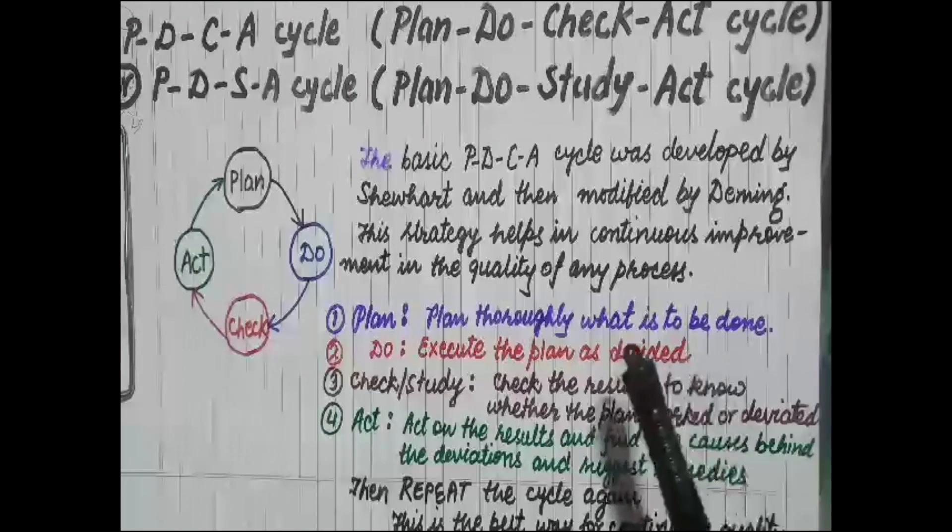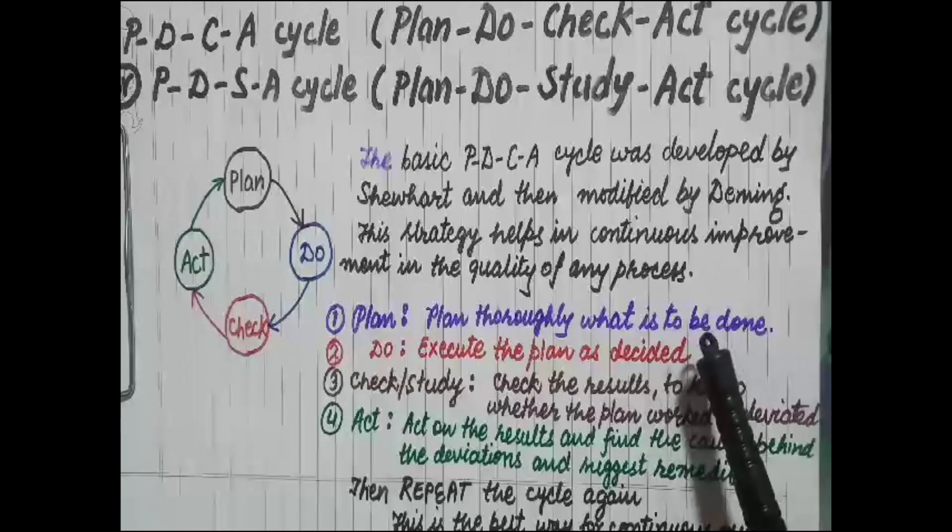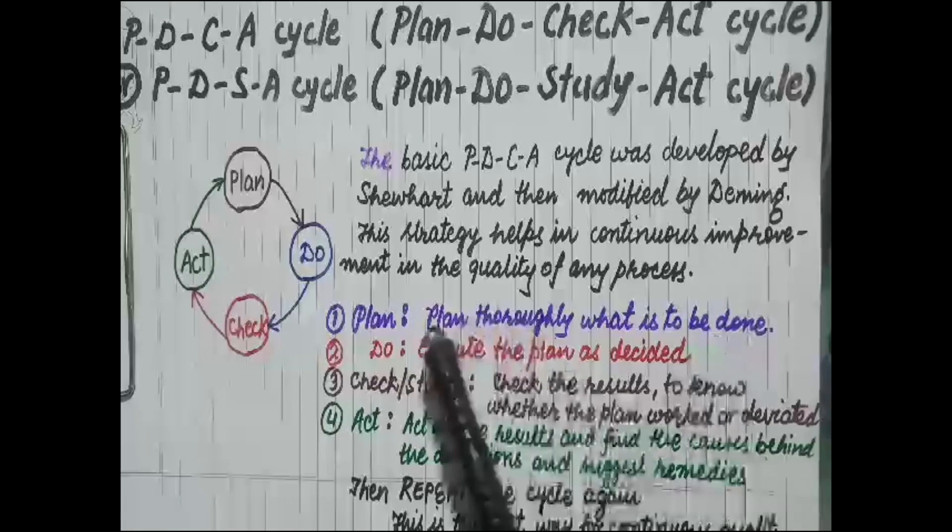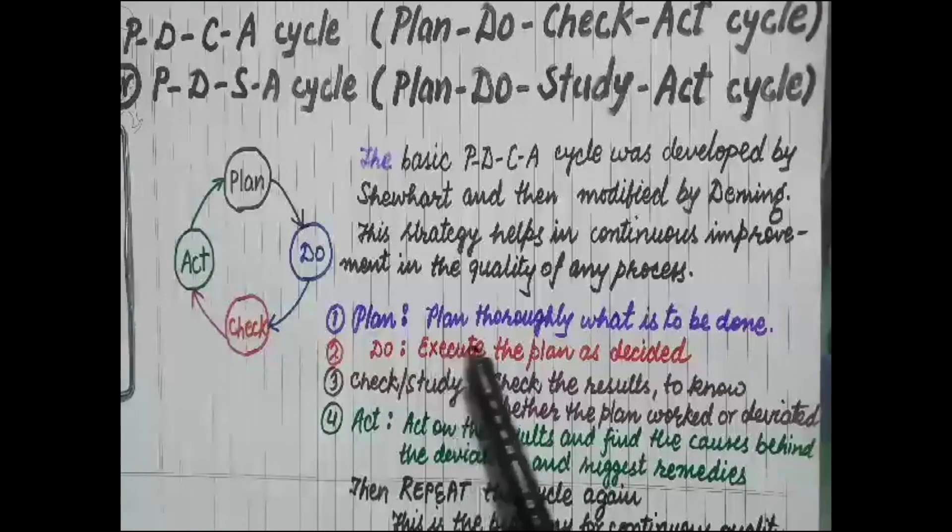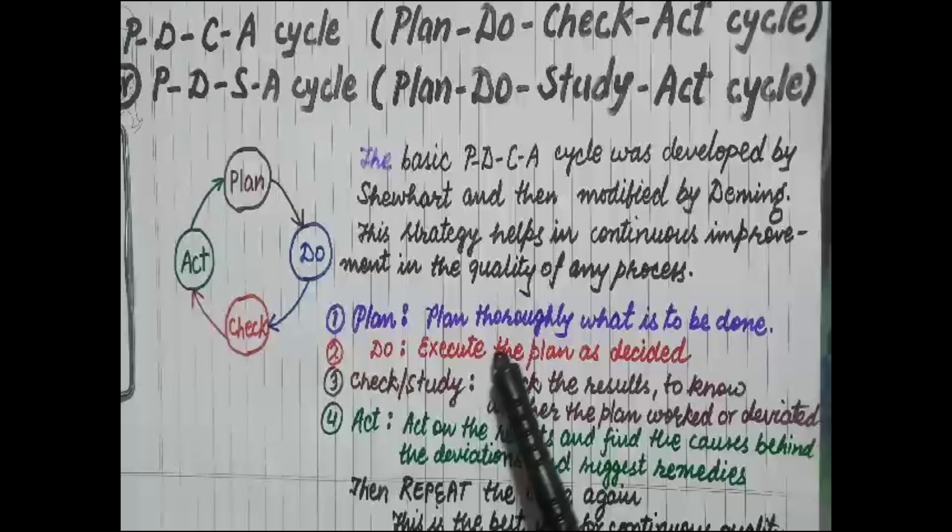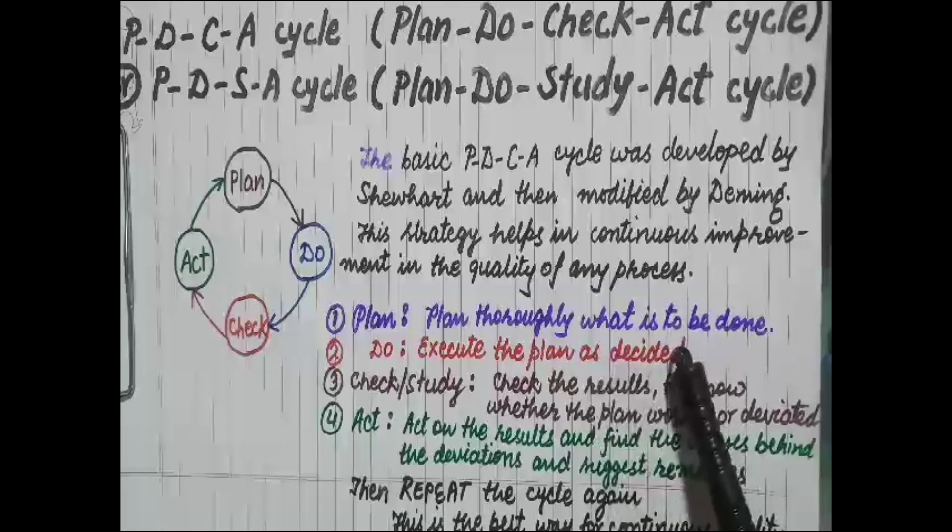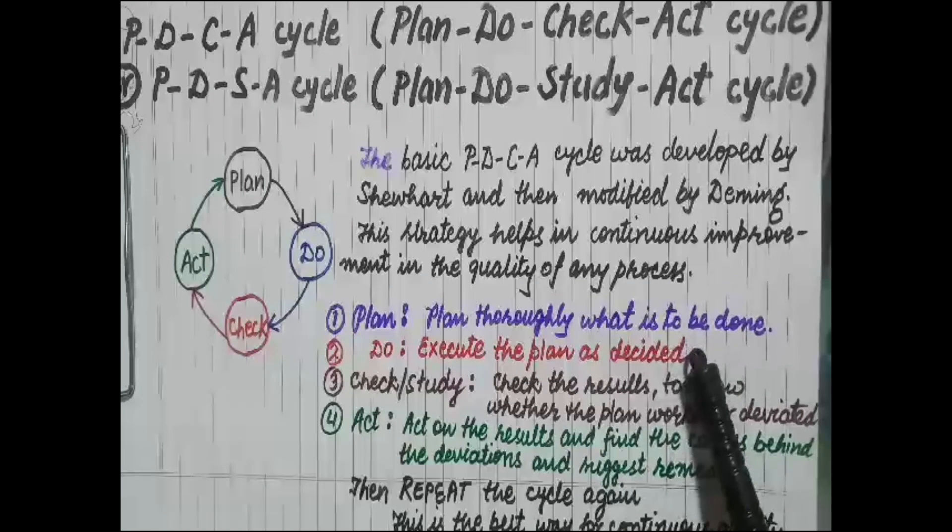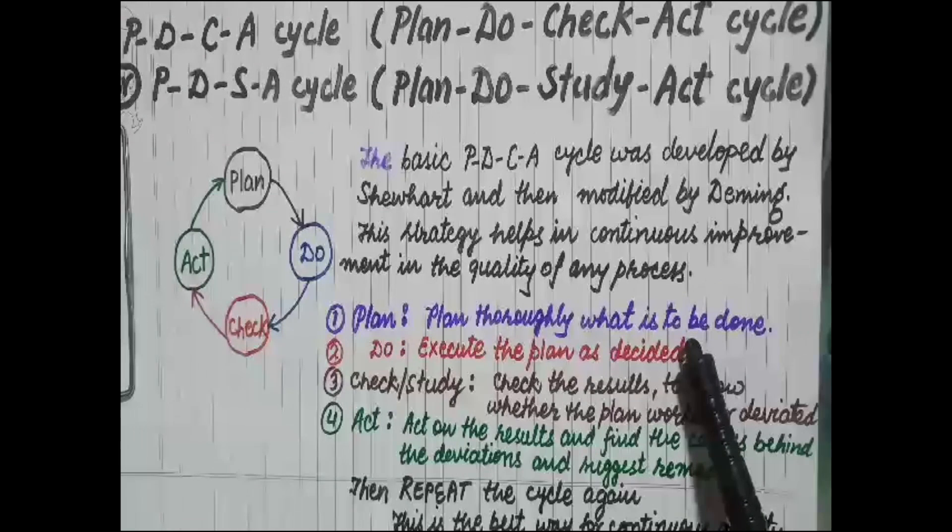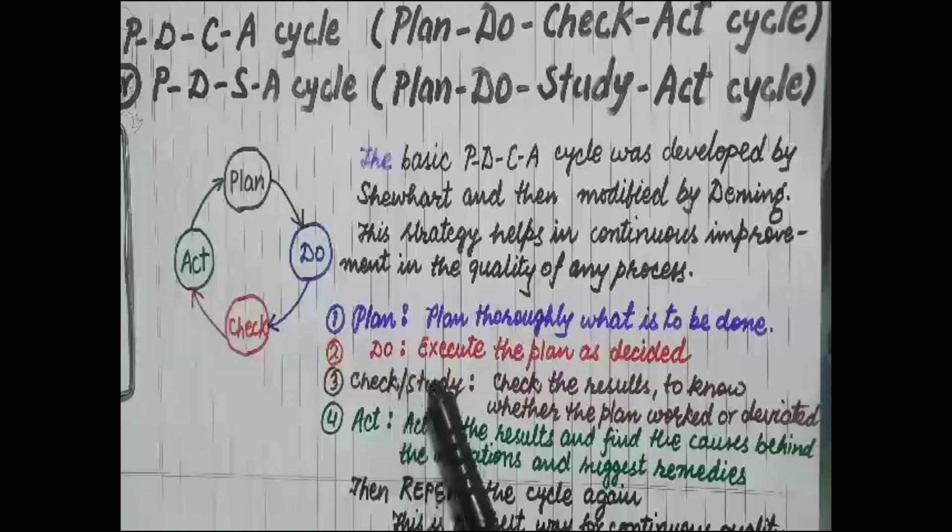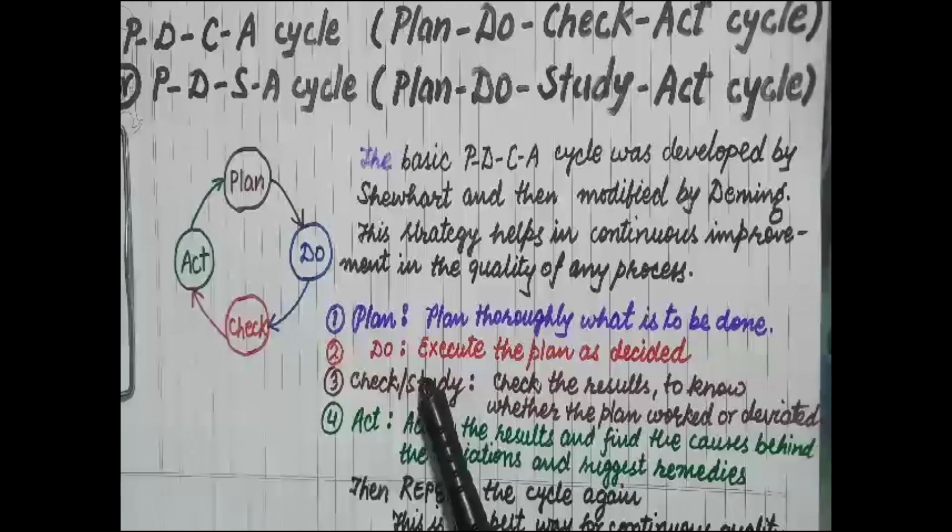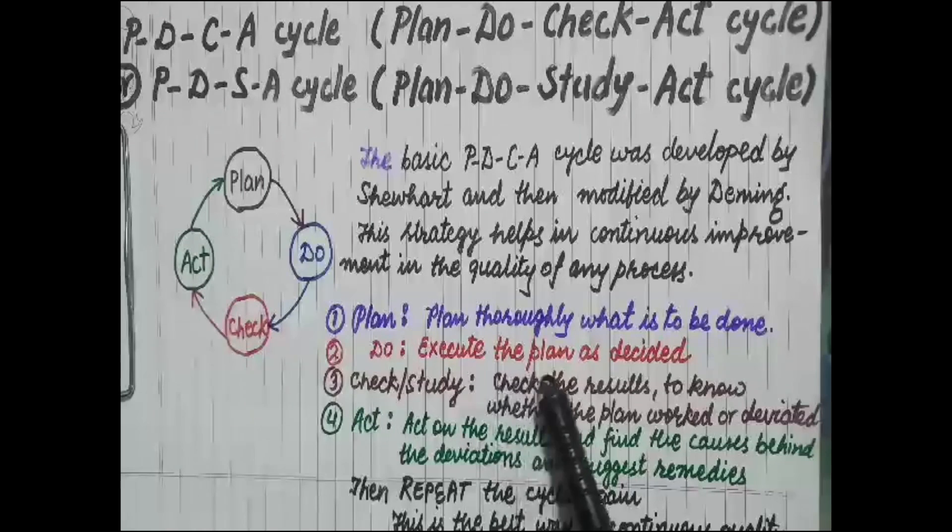So we have to plan everything thoroughly. Then the second step is Do: we have to execute the plan as decided, as documented, without any deviation. The third step is Check or Study: we have to check the